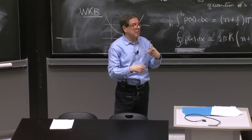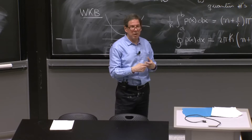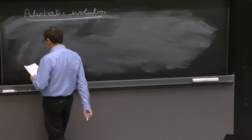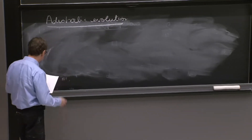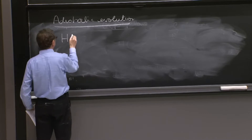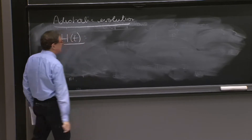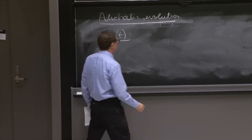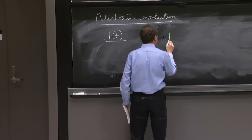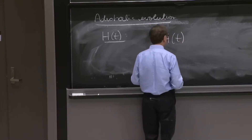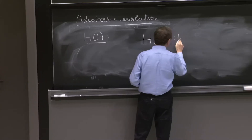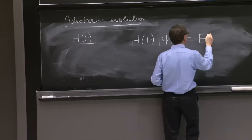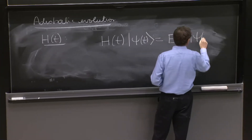You will calculate and determine how big is the suppression to jumping — it will reinforce the idea. So let me begin. Suppose you have an H of t, and you come across states that satisfy h(t)|ψ(t)⟩ = E(t)|ψ(t)⟩.